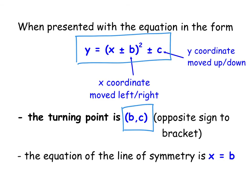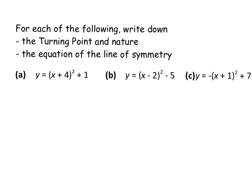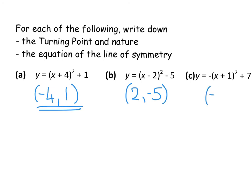The equation of the line of symmetry is just X equals whatever your B value is. For three examples already in completed square form: the first has +4 in the bracket, so the turning point X coordinate is -4, and +1 means moved up one — turning point is (-4, 1). The second has -2 in the bracket, so X coordinate is +2, and -5 means down five — turning point is (2, -5). The third has +1 in the bracket giving X coordinate -1, and the constant is +7 — turning point is (-1, 7).